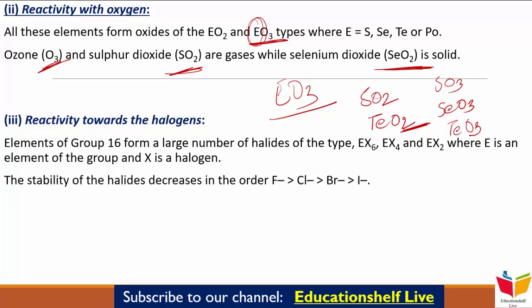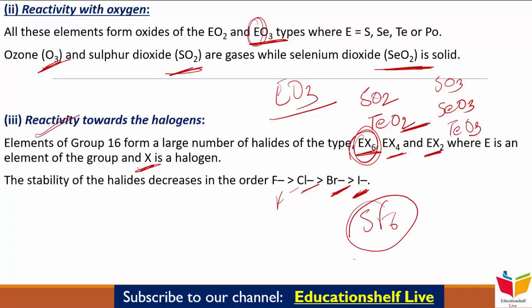Next है Reactivity towards Halogens। Group 16 elements बहुत सारी halides बनाते हैं: EX₆, EX₄, EX₂। Halides की stability decrease करती है F > Cl > Br > I के order में। Hexa halides में, सिर्फ hexafluorides stable होती हैं जैसे SF₆, जो gaseous होती हैं और octahedral structure होता है। SF₆ exceptionally stable रहता है steric reasons की वजह से।